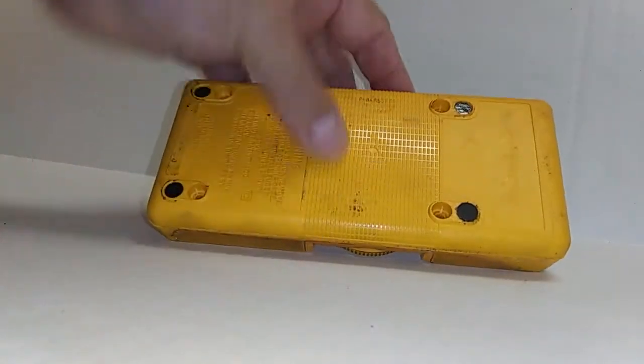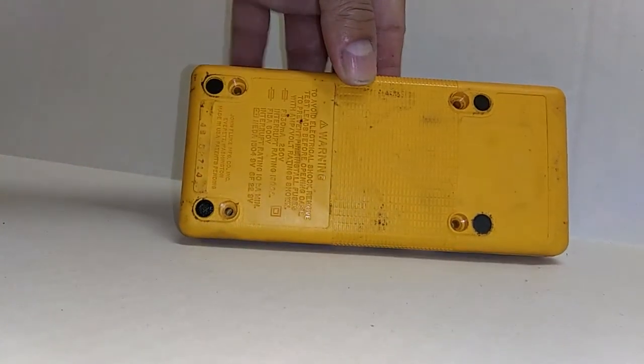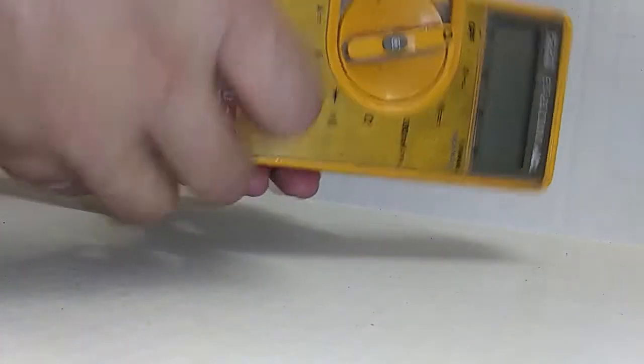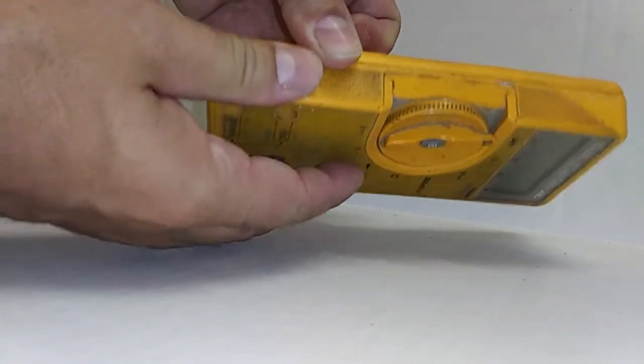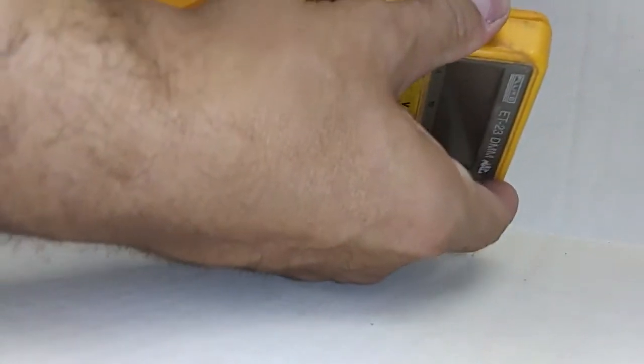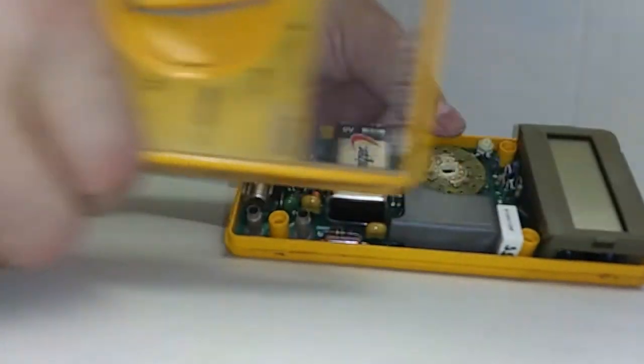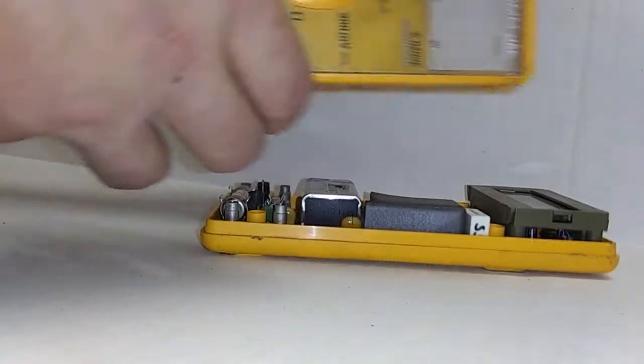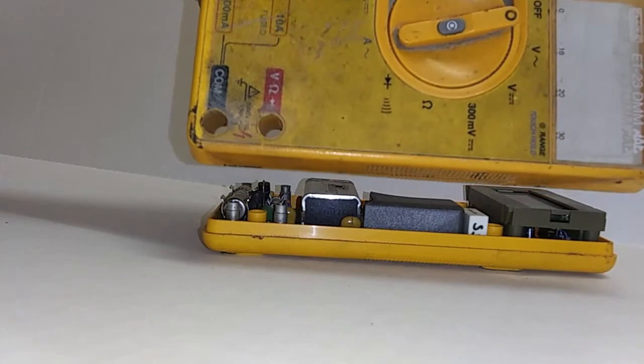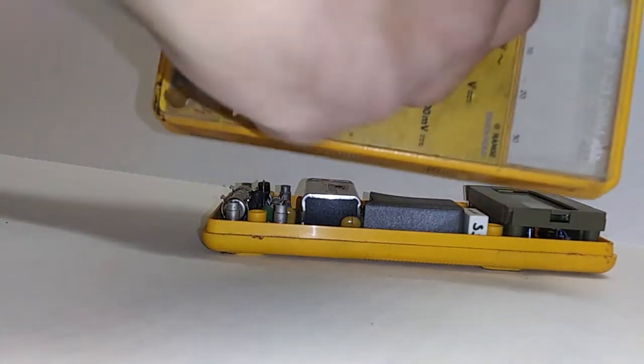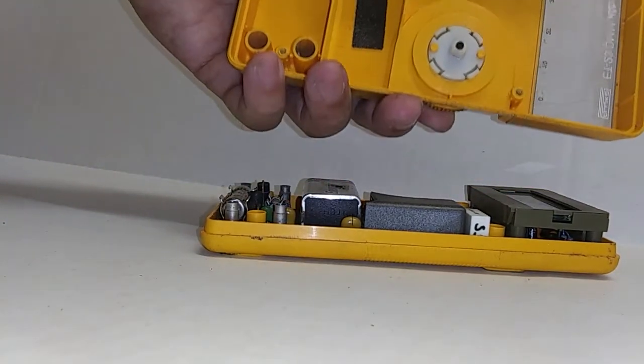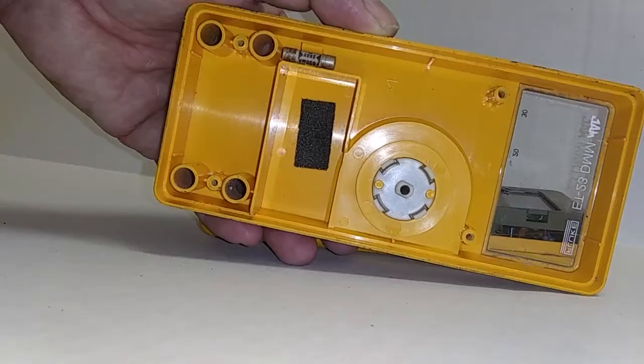So we've got the four screws removed here and we're gonna take it apart. You simply just work along the edges and the top case comes off. So it'll be the top case and this rotary switch that'll come off on its own. This is what it looks like on the inside.